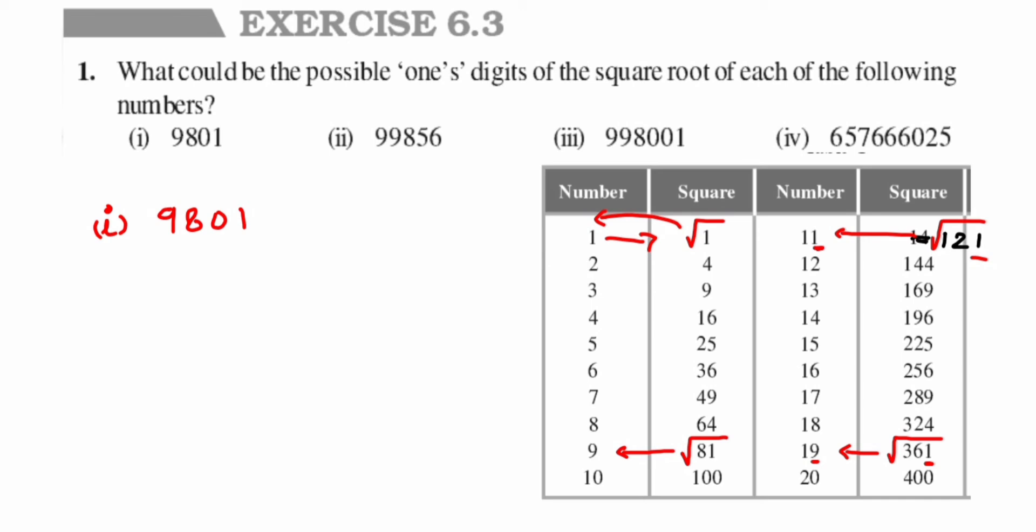From here, what we can conclude is whenever the number ends with 1—any perfect square if it ends with 1—then the square root will have 1 or 9 in the ones place or in the ones digit. That's it. Now let's take the second question.